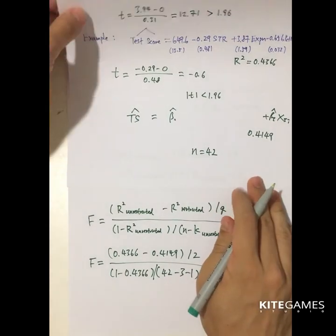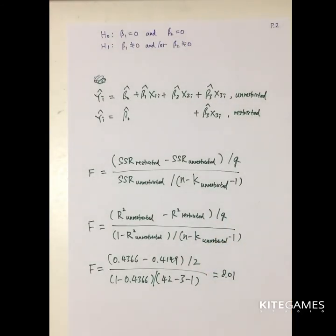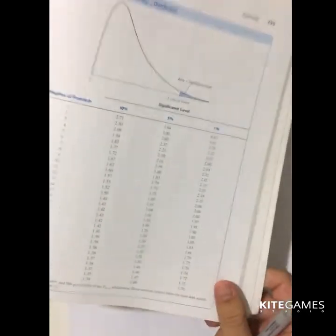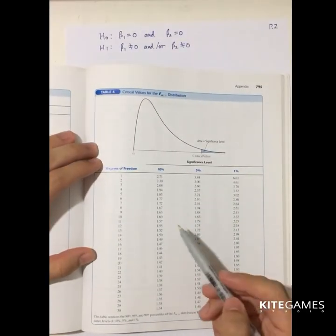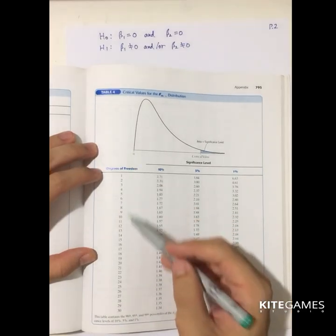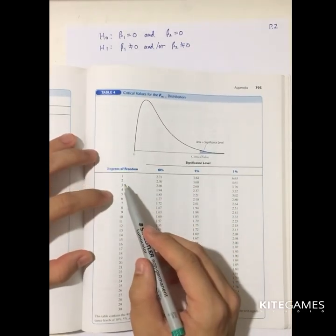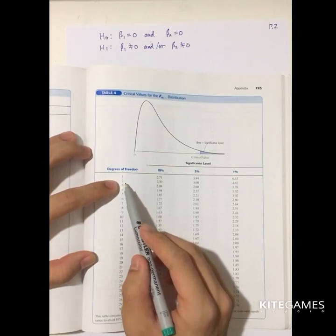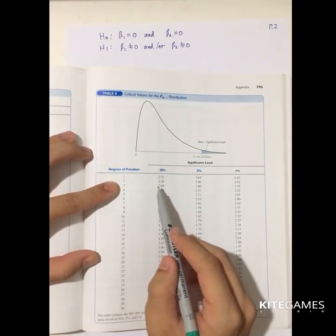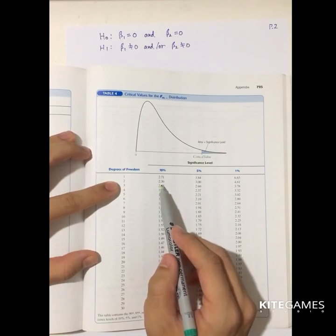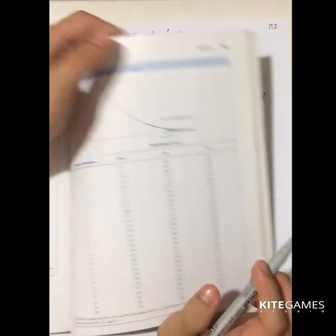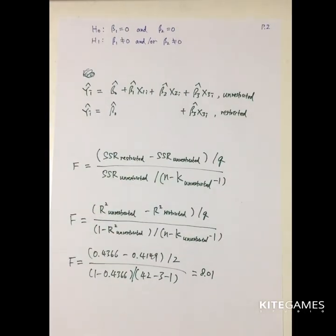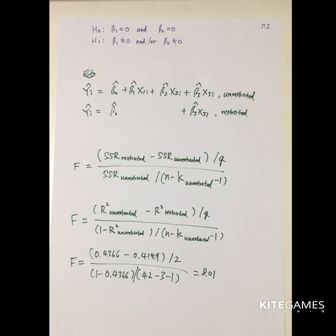After that, we go to the F-statistic table — you can find it easily on Google. You look for the number of restrictions, which is 2. You can see that the F-value of 8.01 is greater than the critical values at the 10%, 5%, and even 1% levels. That means beta1 and beta2 are jointly significant, so these two variables are also important in the estimation.